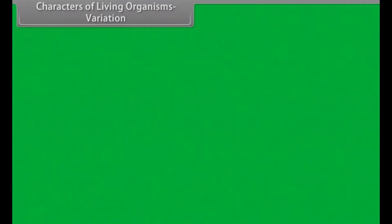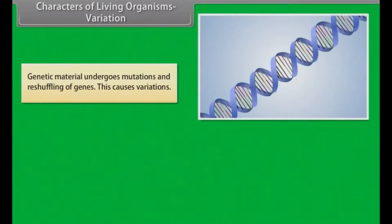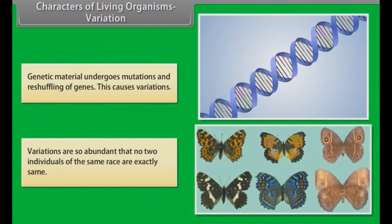Genetic material undergoes mutations and reshuffling of genes, which causes variations. Variations are so abundant that no two individuals of the same race are exactly the same.